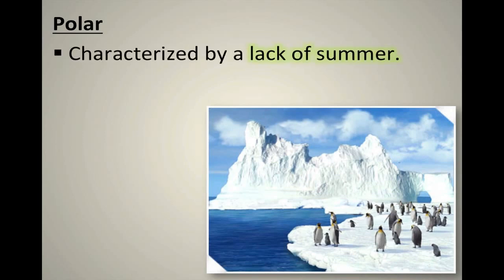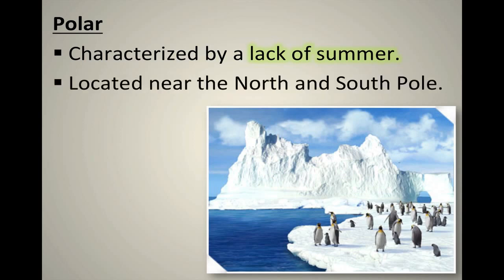Next, we have polar, characterized by a lack of summer. It never gets hot in a polar climate. Polar climates are located near the North and South Pole. In polar regions there's ice, ice, ice — frozen tundra. Interestingly, polar regions can also be considered desert because they are very dry.